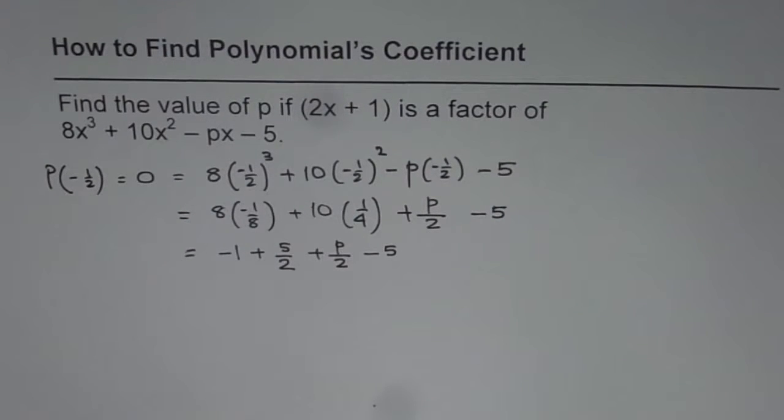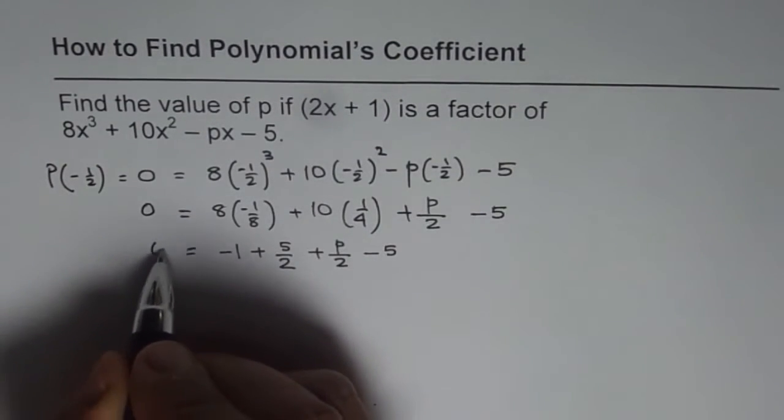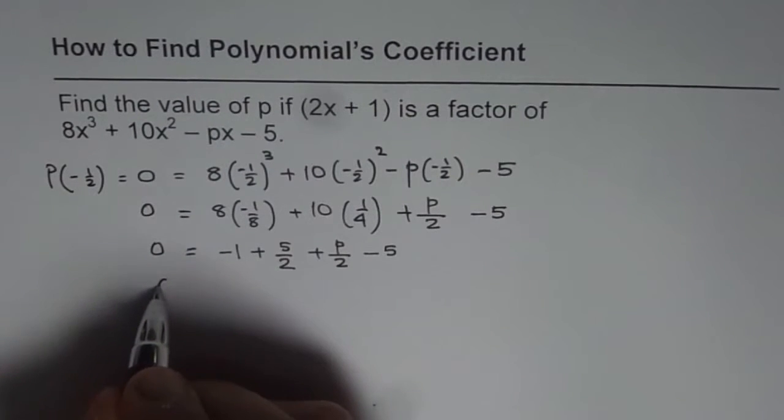Now to simplify, what we can do is we can multiply by 2 on both sides. So we have 0 equals to all this. When I multiply by 2, what do I get?